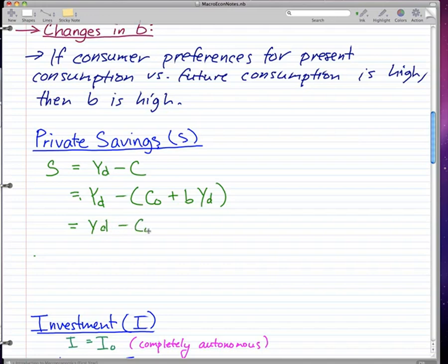If we move things around, then we have minus C naught plus Yd minus b times Yd. Now let's try to take out the Yd, so we get minus C naught plus one minus b times Yd.